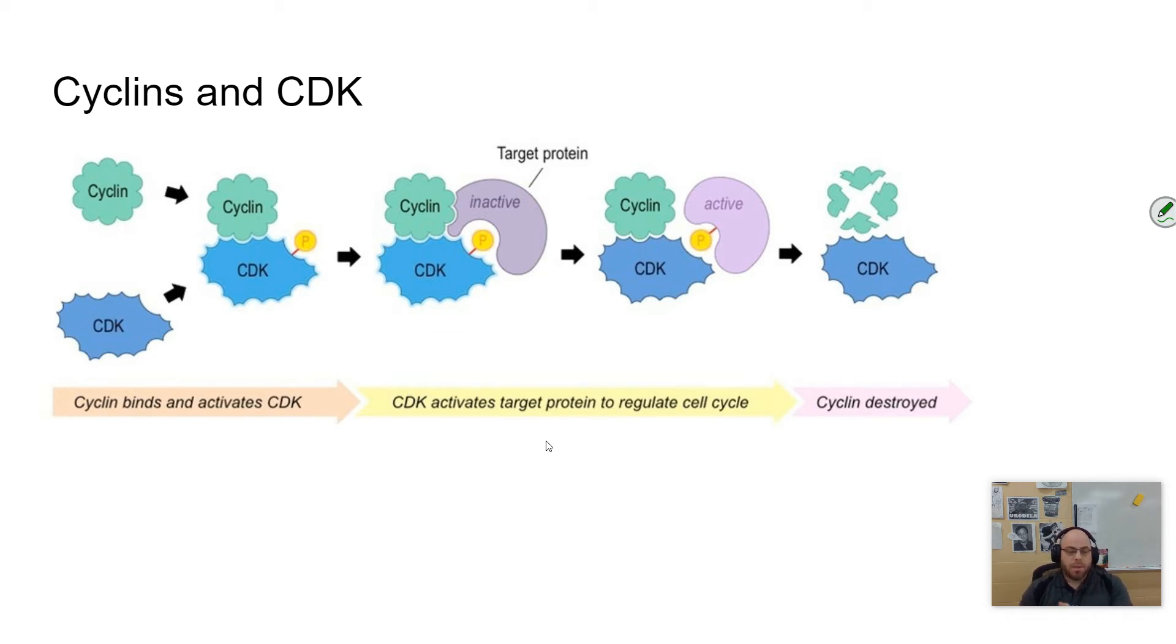When cyclins begin to degrade, that degradation inhibits the cell cycle. The amount of cyclin in the cell is directly proportional to whether or not that cell will divide. The way this works involves another molecule called CDK, which stands for cyclin-dependent kinase.